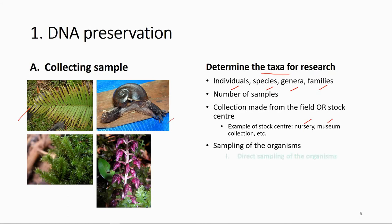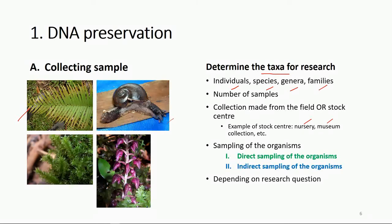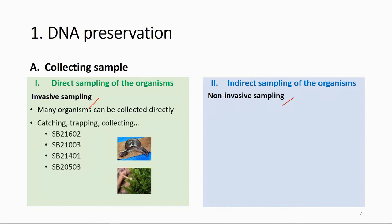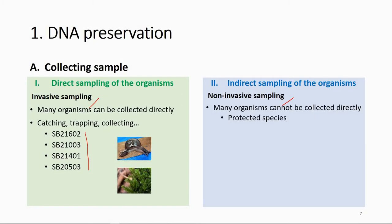If you have to do sampling, you can use the direct sampling method or indirect sampling method, depending on the research questions and the organism. The direct sampling method is what we call invasive sampling, and the indirect sampling method is what we call non-invasive sampling. For direct sampling, you find and collect the organism — you have direct contact with it. For non-invasive sampling, you do not directly contact the organism. Many organisms cannot be collected directly, for example protected species, which you are not allowed to harm.